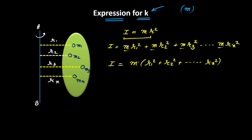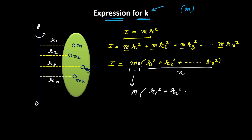At this step I can multiply and divide by N, where N is the number of point masses. M times N would be the total mass of the system, since the system contains N point masses each of mass M — so M·N becomes capital M. This gives I = M × (R1² + R2² + ... + Rn²) / N, which is the total moment of inertia.